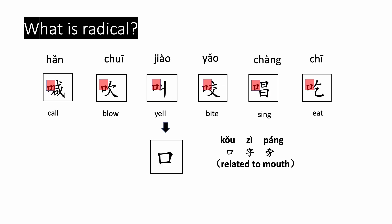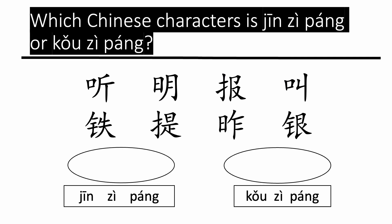The second radical is 口字旁. 口 means mouth, so it is related to the mouth. Examples include: 喊 (shout), 吹 (blow), 叫 (call), 咬 (bite), 唱 (sing), and 吃 (eat). Let's also do a little test — which Chinese characters use 金字旁 or 口字旁?